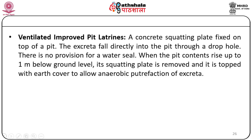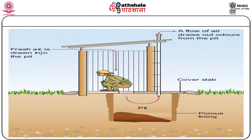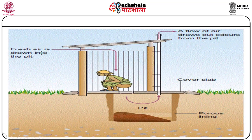Ventilated improved pit latrines, popularly known as VIP latrines, have a concrete squatting plate fixed on top of the pit. The excreta falls directly into the pit through a drop hole. There is no provision for a water seal. When the pit contents rise to one meter below ground level, the squatting plate is removed and topped with an earth cover. A flow of fresh air is drawn into the pit, drawing out odours, making this an improved variety of pit latrine.